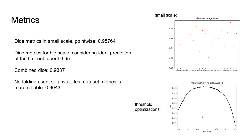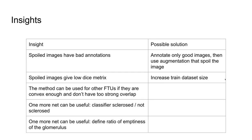Here is the optimization of the threshold for the small scale. I found an insight: spoiled images had bad annotation because it is difficult to annotate spoiled images. The solution is to annotate only good images and then spoil them with augmentation. Also, spoiled images give low Dice scores, and the solution is to increase the training dataset.